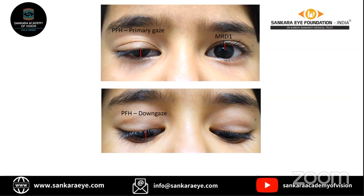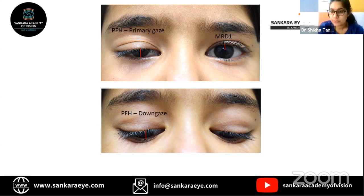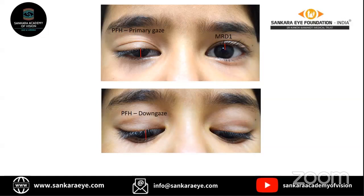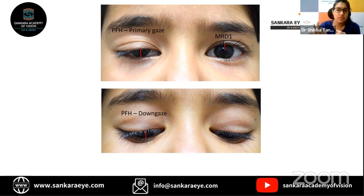Dr. Saptagirish adds: instead of shining the torch straight into the patient's face, you can ask the patient to look at a window with natural sunlight — this avoids patients squeezing their eyes. For exams, use a dim or pinpoint light source so patients don't squeeze. If the flash is too bright, place your fingers in front of the torch to reduce the flash effect.